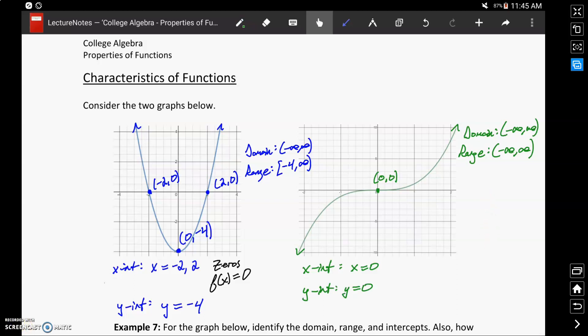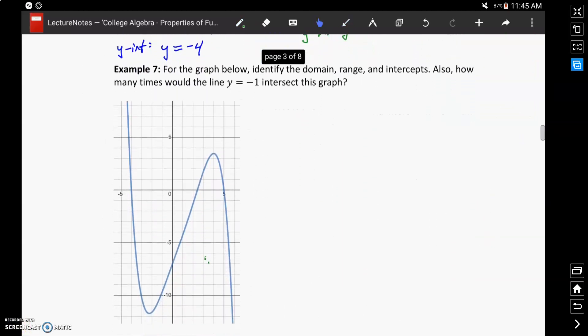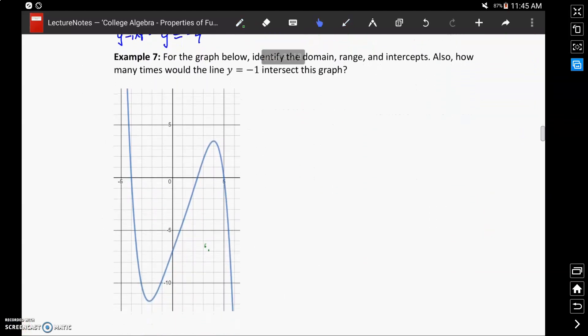We can take that idea and look at a new graph which has an additional question mixed in here. In example 7, we want to identify the domain and range of this graph, its intercepts, and also how many times the line y equals negative 1 would intersect with it.